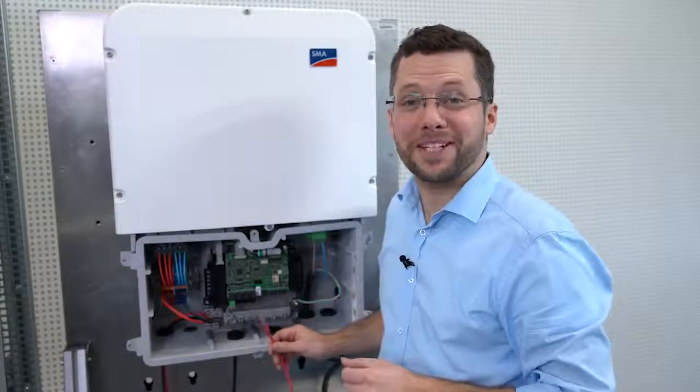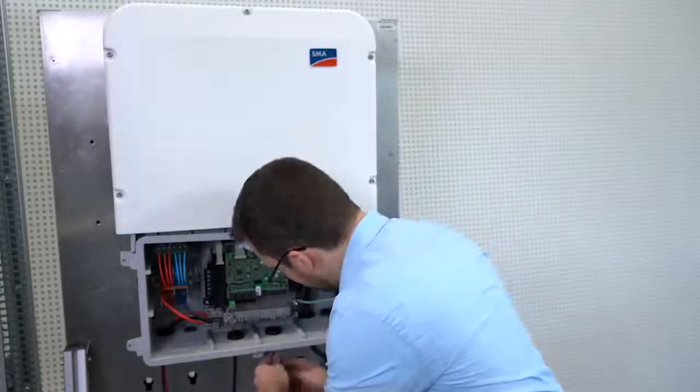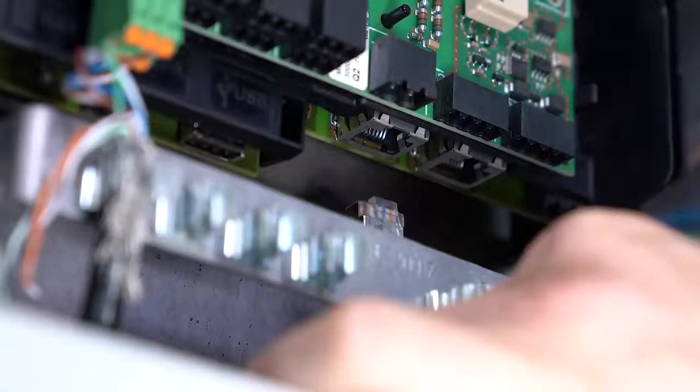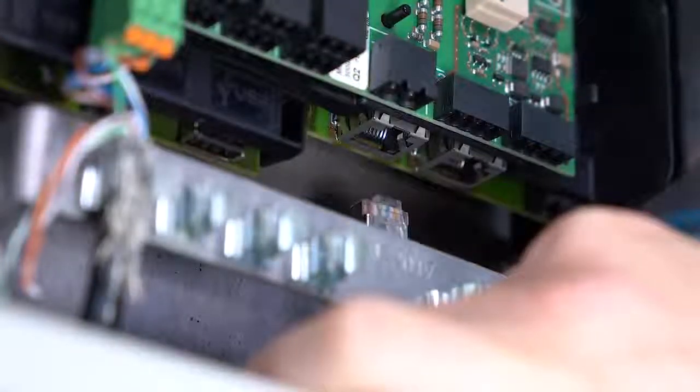Now, for the network connection, please pass the network cable through the cable gland. Then, connect the RJ45 cable into the Ethernet port until it clicks into place.